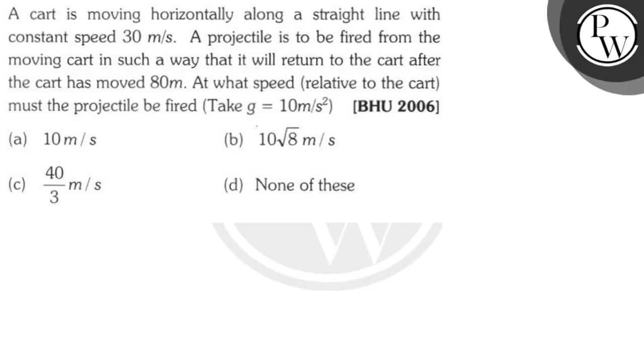Hello, let's see this question. A cart is moving horizontally along a straight line with constant speed of 30 meter per second. A projectile is to be fired from the moving cart in such a way that it will return to the cart after the cart has moved 80 meter. At what speed relative to the cart must the projectile be fired? Take g equals 10 meter per second squared.